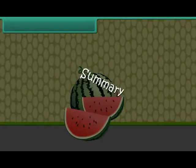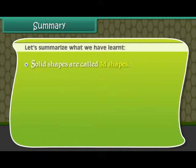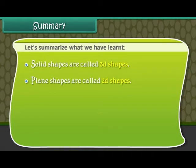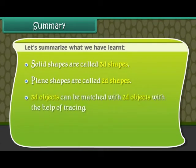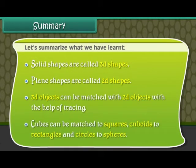Summary. Let us summarize what we have learned. Solid shapes are called 3D shapes. Plane shapes are called 2D shapes. 3D objects can be matched with 2D objects with the help of tracing. Cubes can be matched to squares, cuboids to rectangles, and circles to spheres.